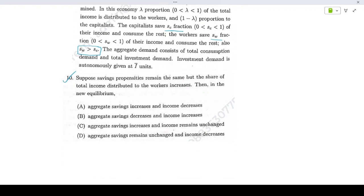The question says: suppose saving propensities remain the same, but the share of total income distributed to the workers increases. That means we are talking of an increase in lambda. Then in the new equilibrium, we want to find the effect on aggregate savings and income.